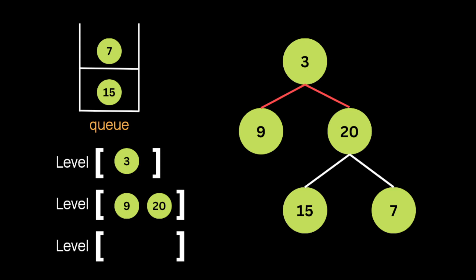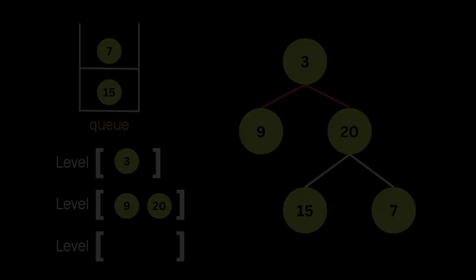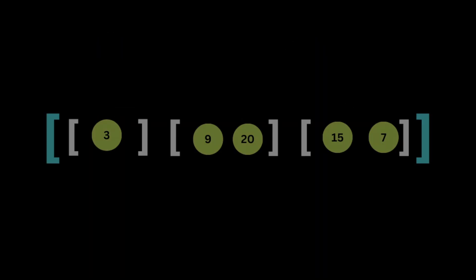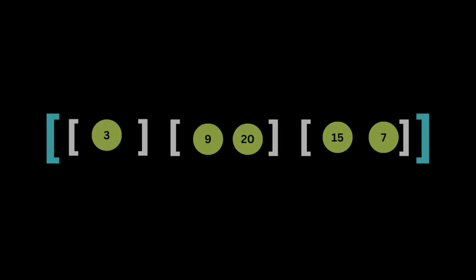In this example the node with value 20 has two children, so the same process is repeated for those. Finally, we group all the level lists into one result array. That's it — let's jump into coding the solution.